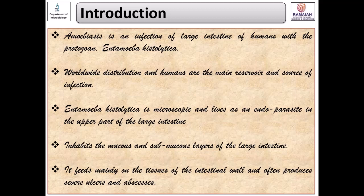When it feeds on the intestinal wall tissues, it results in ulcers and abscesses of the liver and intestine. The liver is affected in severe or chronic cases, where the Entamoeba histolytica enters the blood circulation and starts to affect other organs like the liver, lungs, and brain. This can cause serious and often fatal disease, referred to as amoebic dysentery or amoebiasis.